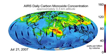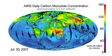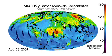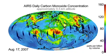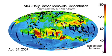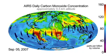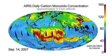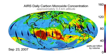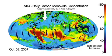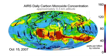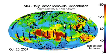Because of AIRS' sensitivity above the surface, the infrared sounder generally sees larger carbon monoxide concentrations downwind of their sources after the air is lifted to where AIRS can see it best. This accounts for the larger carbon monoxide concentrations often seen over the North Atlantic Ocean east of the United States, as well as over the North Pacific Ocean east of Asia.